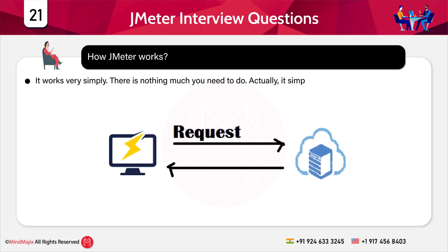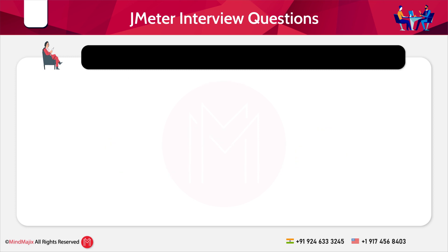The next question is: how does JMeter work? It works in a very simple manner. It acts as a pool of users that send their requests to the server. Collecting all the responses from the server is the responsibility of JMeter. These responses are then considered for analyzing the performance of the applications.